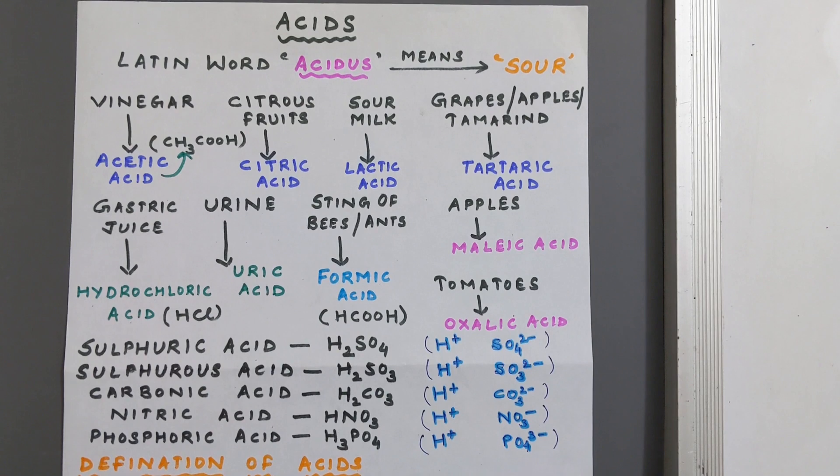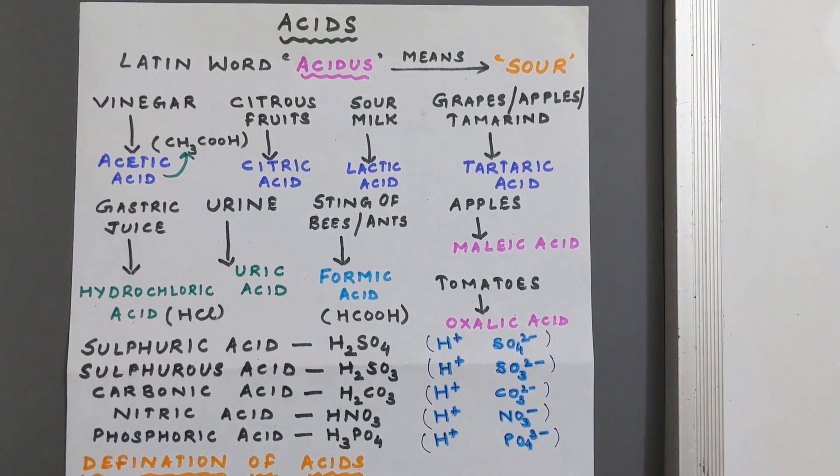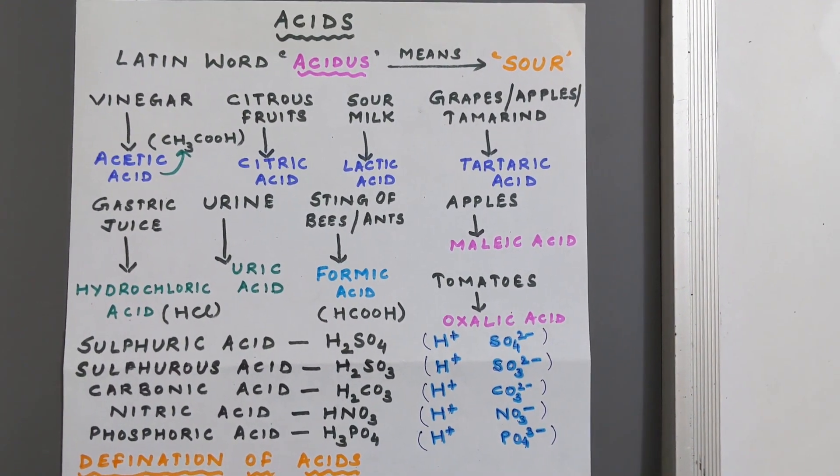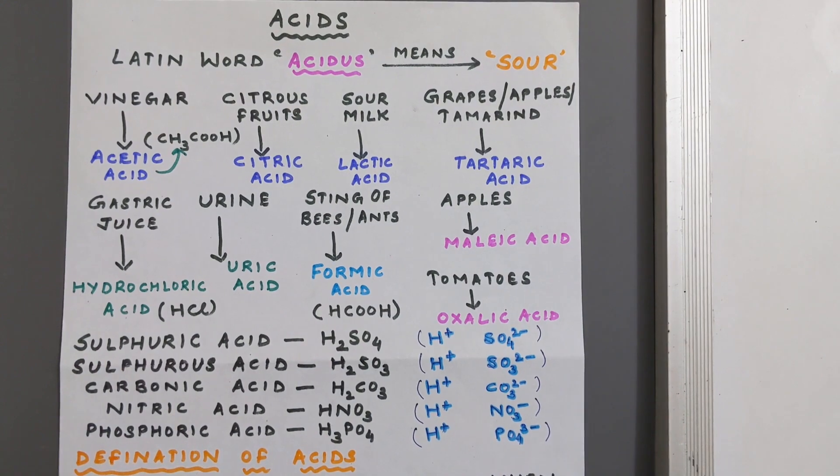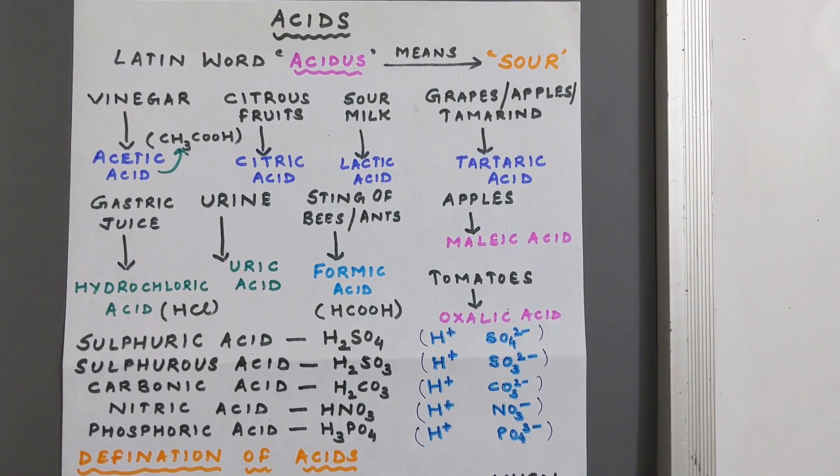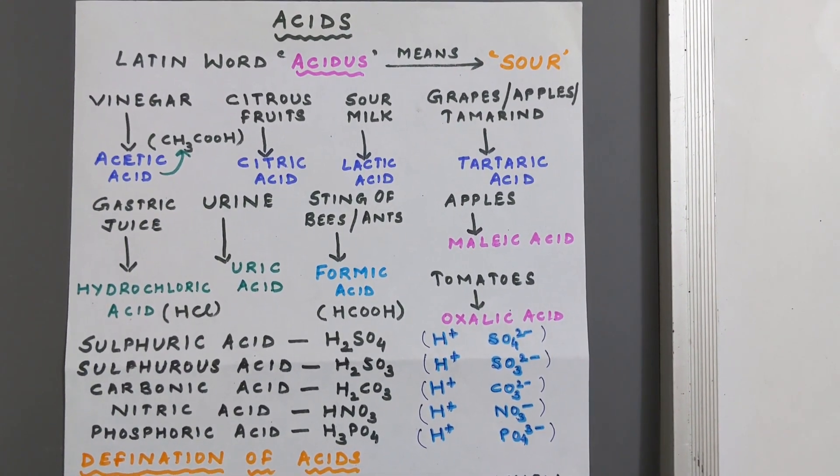Sour milk contains lactic acid. Grapes, apples, and tamarind (known as Emily) contain tartaric acid. Gastric juices in our stomach contain hydrochloric acid. Urine contains uric acid. Sting of bees and ants contains formic acid, which is HCOOH. Apples contain malic acid and tomatoes contain oxalic acid.